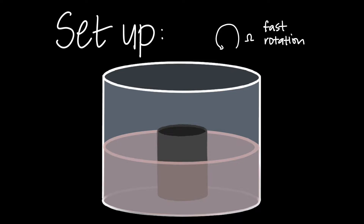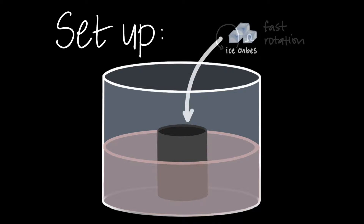If you're interested to see what happens with slow rotation, check out the link in this video's description. After we let the tank spin up, or reach solid body rotation, we add some ice to the empty can.